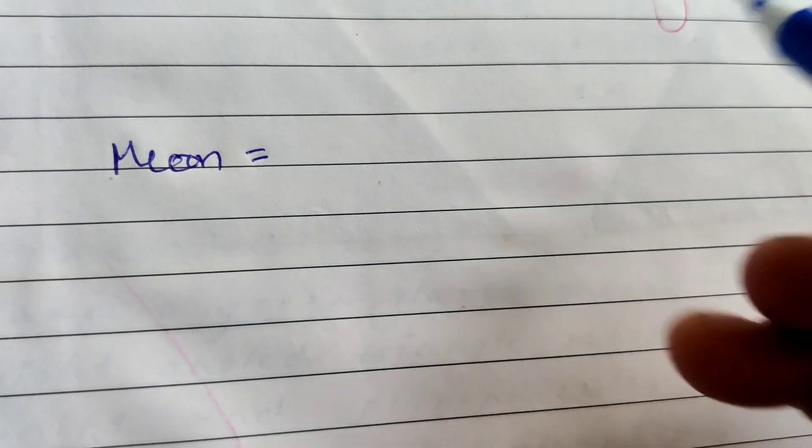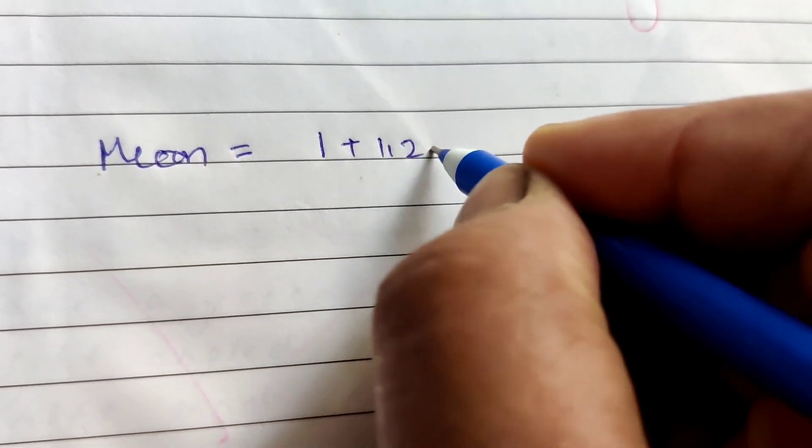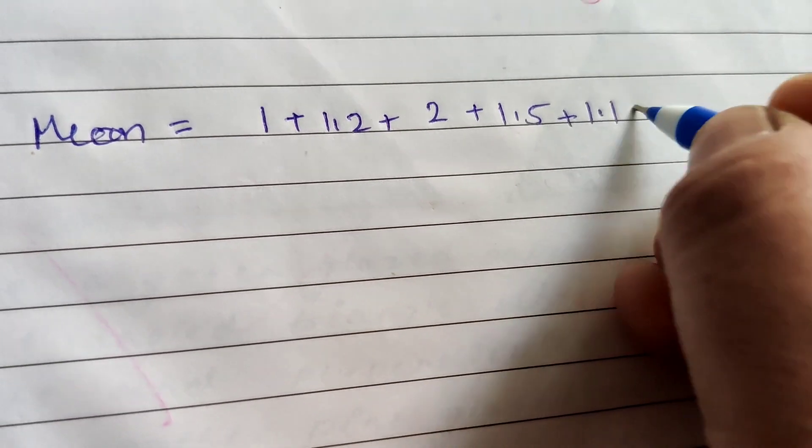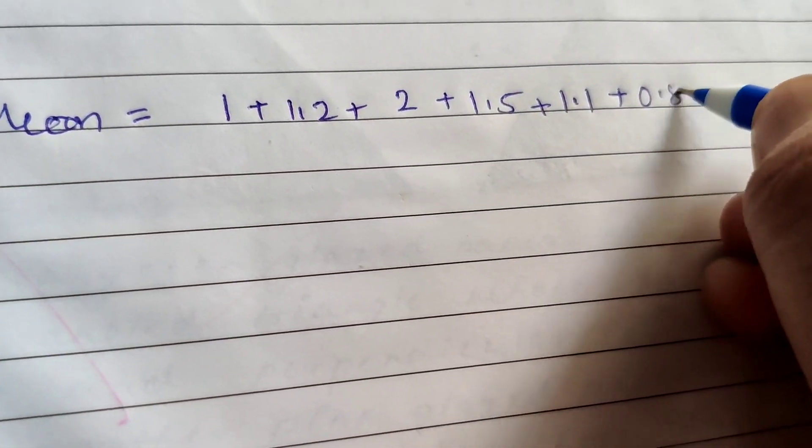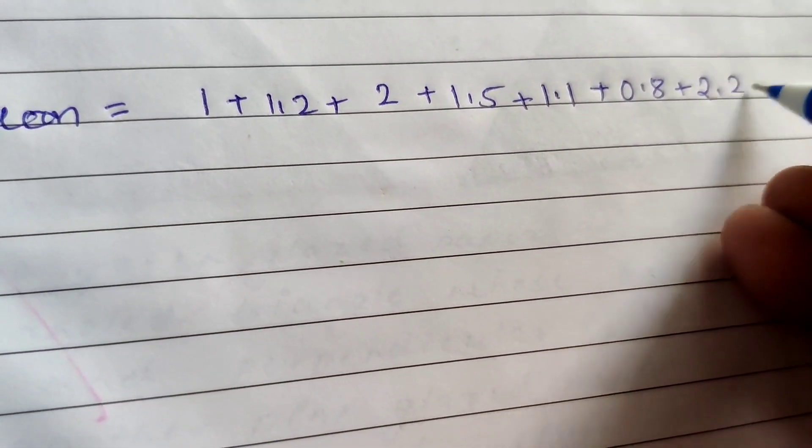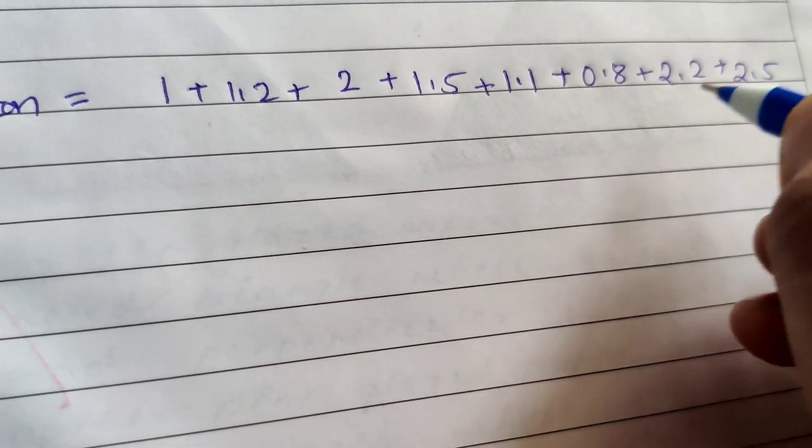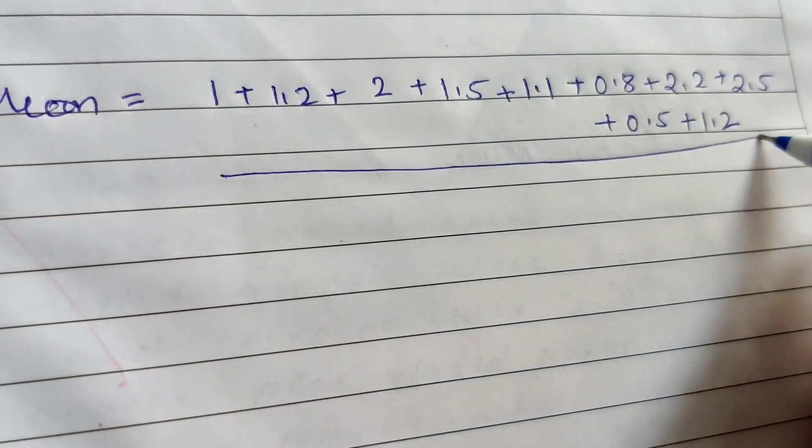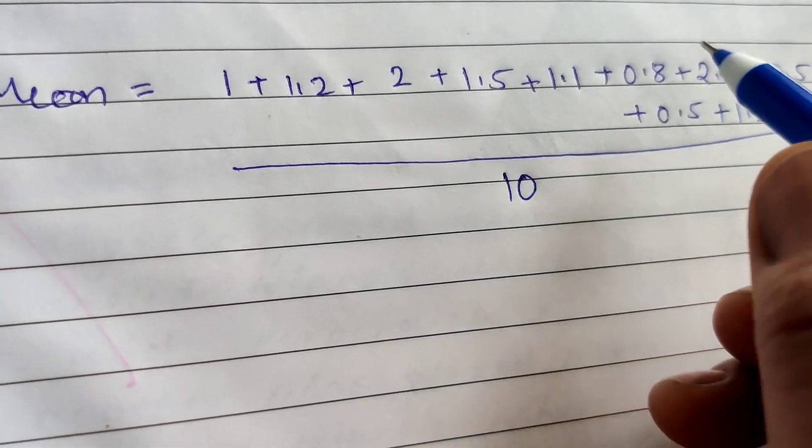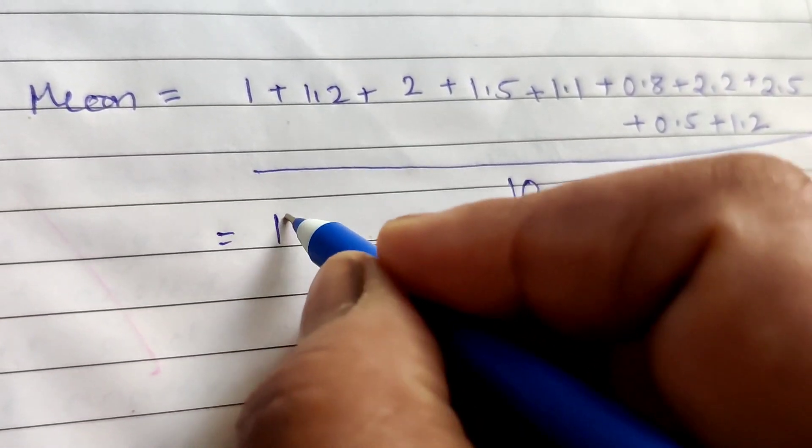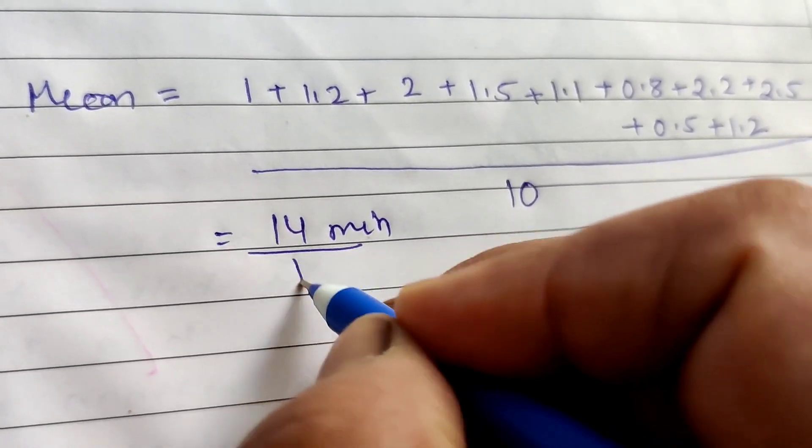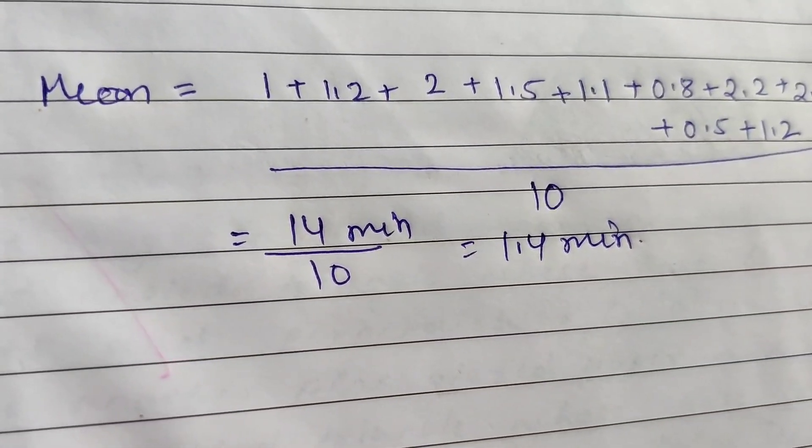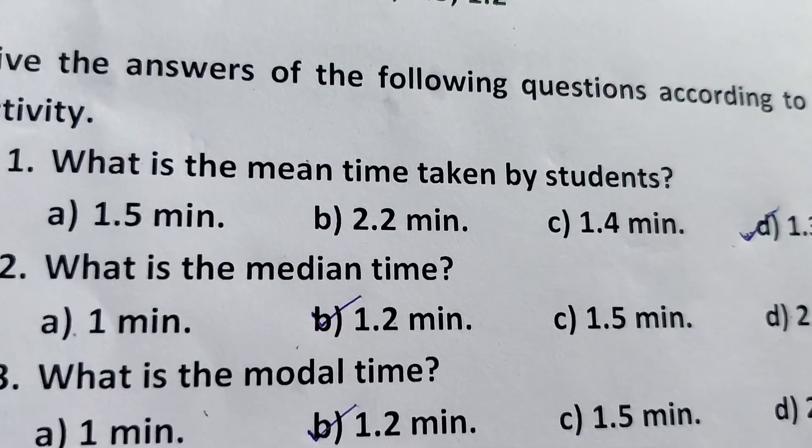Now mean equals sum of all observations: 1 minute, 1.2, next is 2, 1.5, 1.1, plus 0.8, plus 2.2 minutes, 2.5, plus 0.5, plus 1.2, divided by 10. Now add all these, we will get 14 minutes. 14 minutes divided by 10 equals 1.4 minutes. The mean time taken by the students is 1.4 minutes.